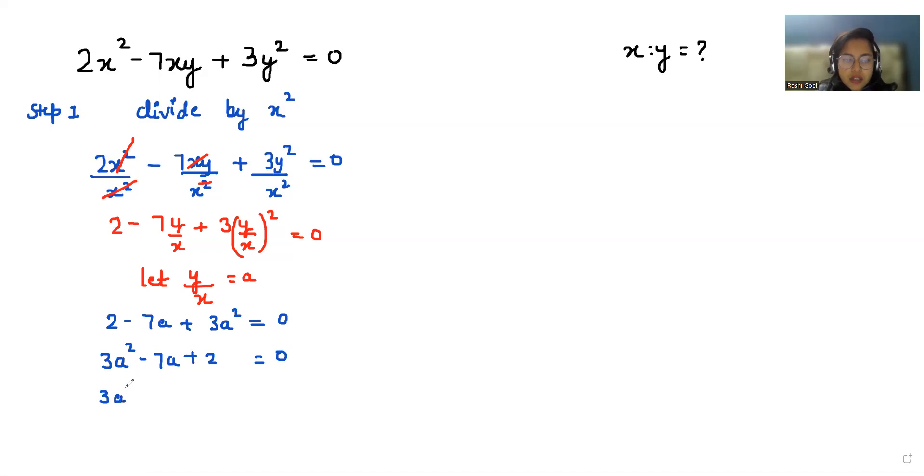We can write it as 3a² minus 6a minus a plus 2 equals 0. If I take 3a as common, so a minus 2. If I take minus 1 as common, so a minus 2 equals 0. If I take a minus 2 again common, so 3a minus 1 equals 0 is left.